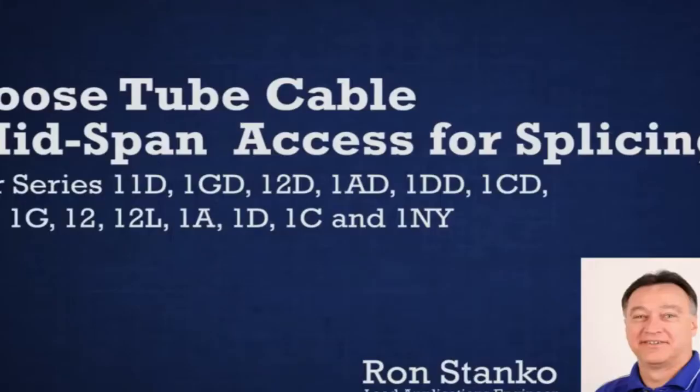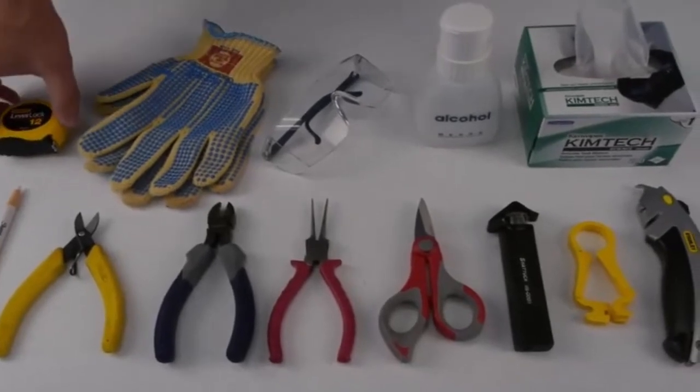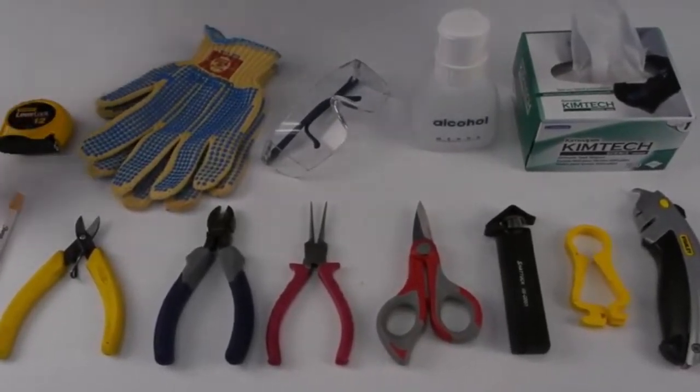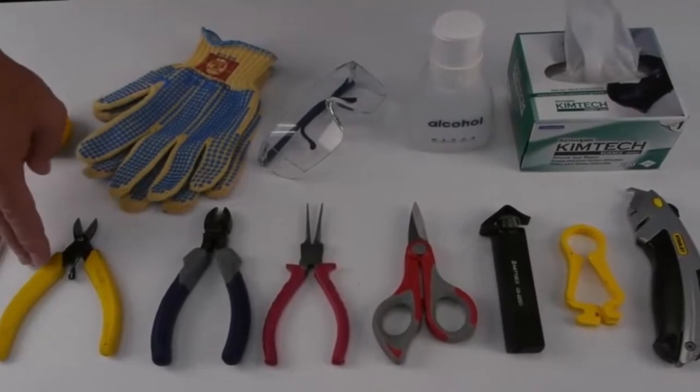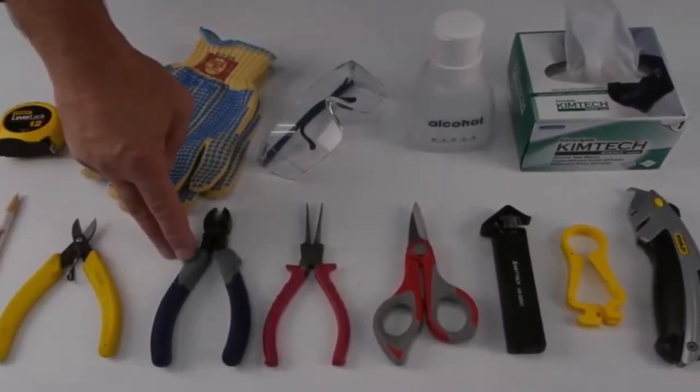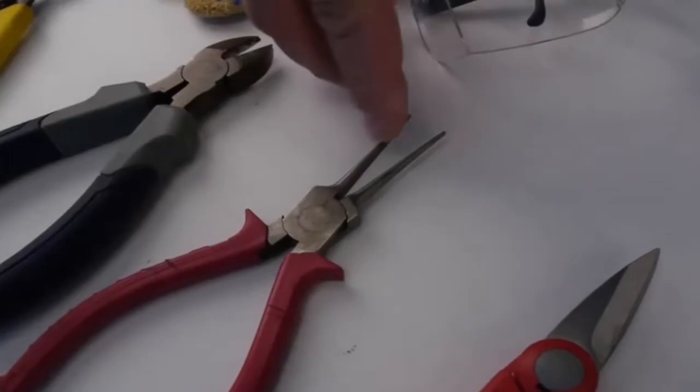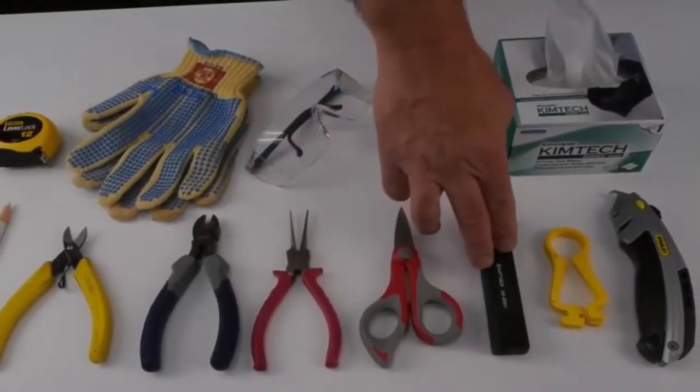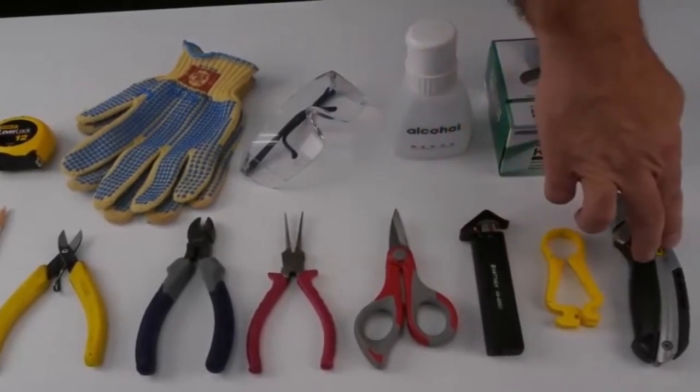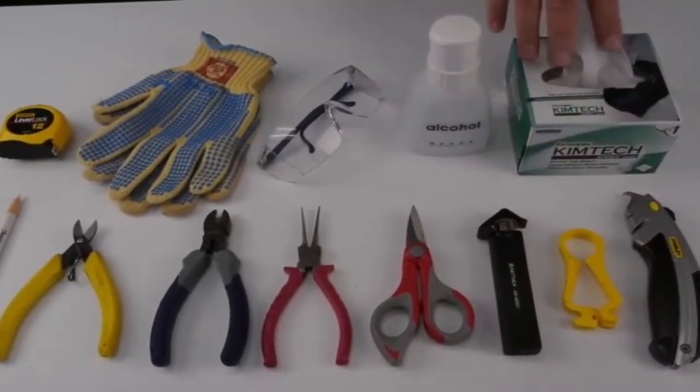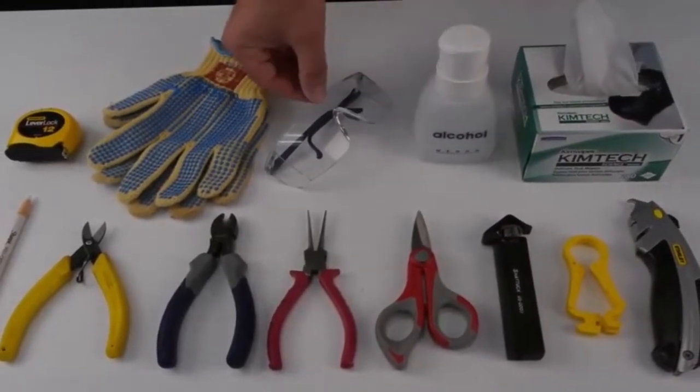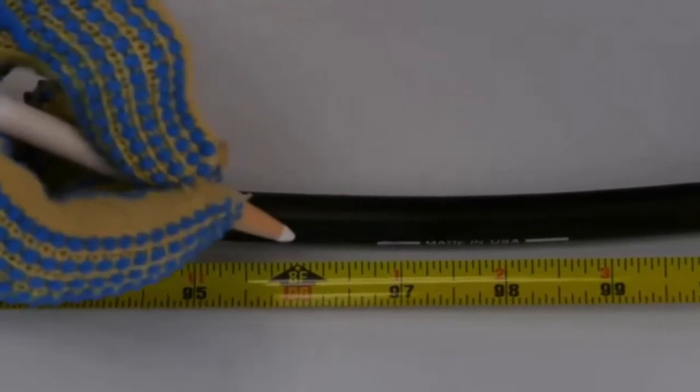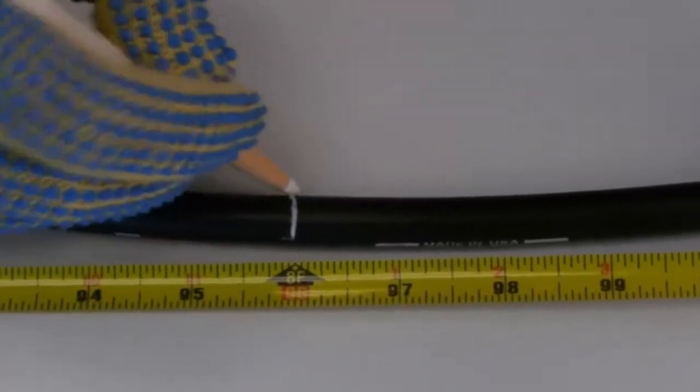Hello, my name is Ron Stanko. And this video will demonstrate loose tube cable mid-span access for splicing. Materials required: measuring tape, China marker, aramid shears, diagonal cutters, needle nose pliers, preferably with rounded edges, cable snips, rotary cable slitter, fiber tube scorer, hook blade razor knife, lint free wipes, reagent grade 99% alcohol, safety glasses and gloves. Determine the location of the cable where the splice point is to be located.